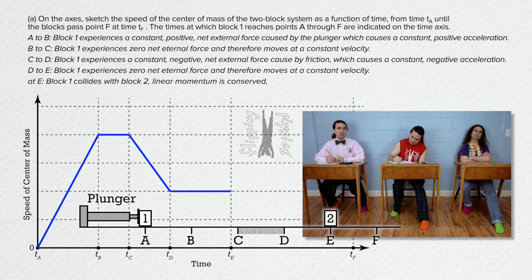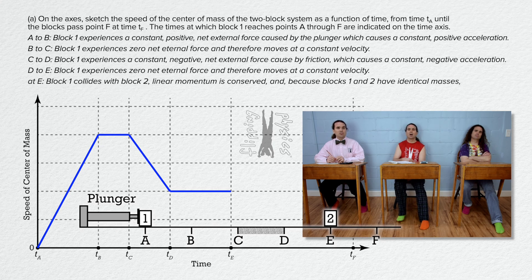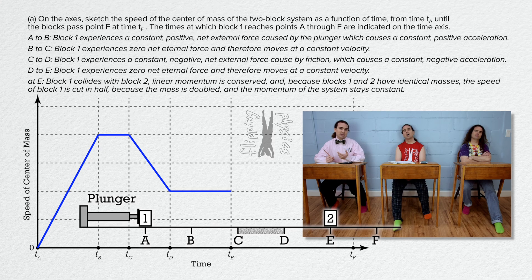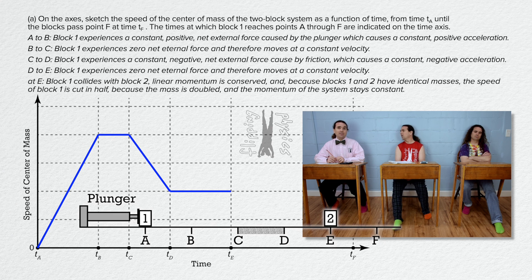Linear momentum is conserved during the collision and because blocks 1 and 2 have identical masses, the speed of block 1 is cut in half because the mass is doubled and the momentum of the system stays constant. So suddenly at time E, the speed of block 1 drops to half its value.